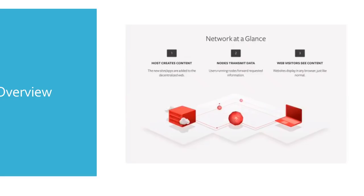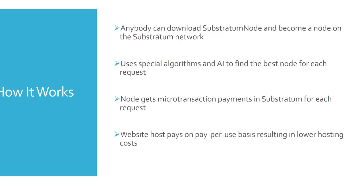So let's see how the network actually works. Substratum allows for anybody to become a node, and the only technical knowledge you need is to go to the website, download the software, go on to the easy-to-use interface, allocate how much computing power you want for running your node, and then turn your node on — that's it. When someone tries accessing a website on the decentralized web, it'll use the visitor's location and geolocate the closest node to service that request. When a node services a request, it gets paid in microtransactions of Substratum — that's the incentive for running a node.